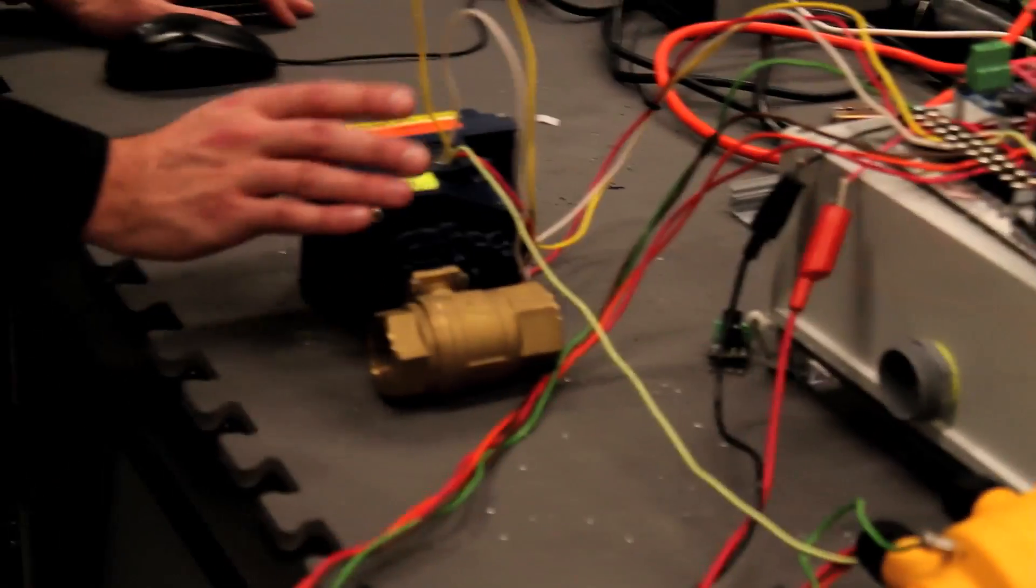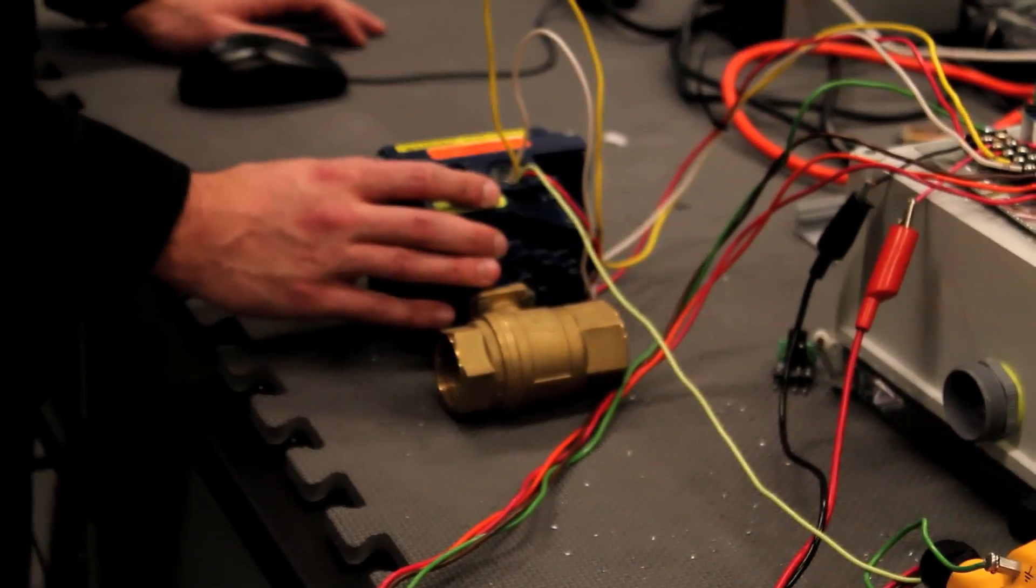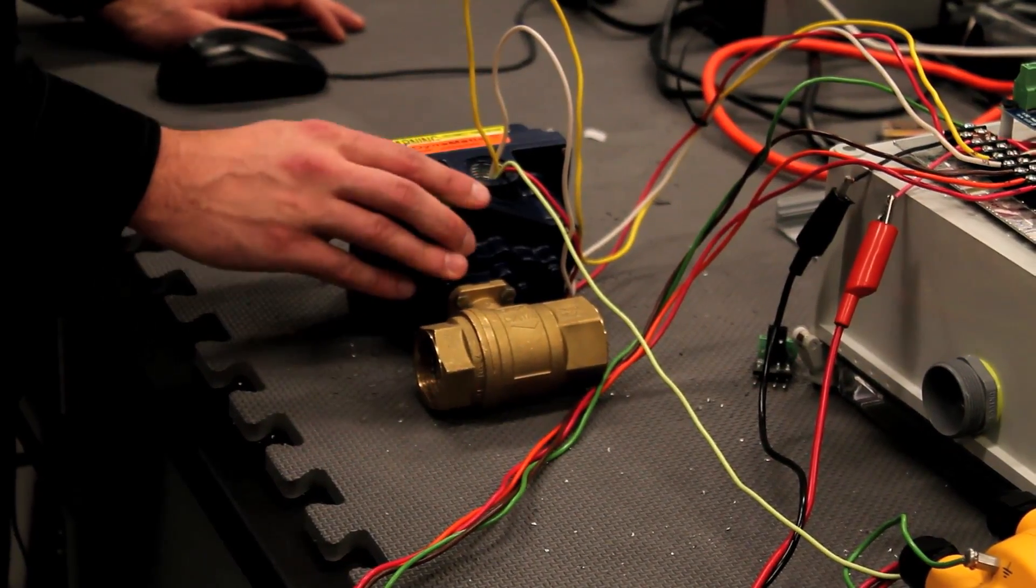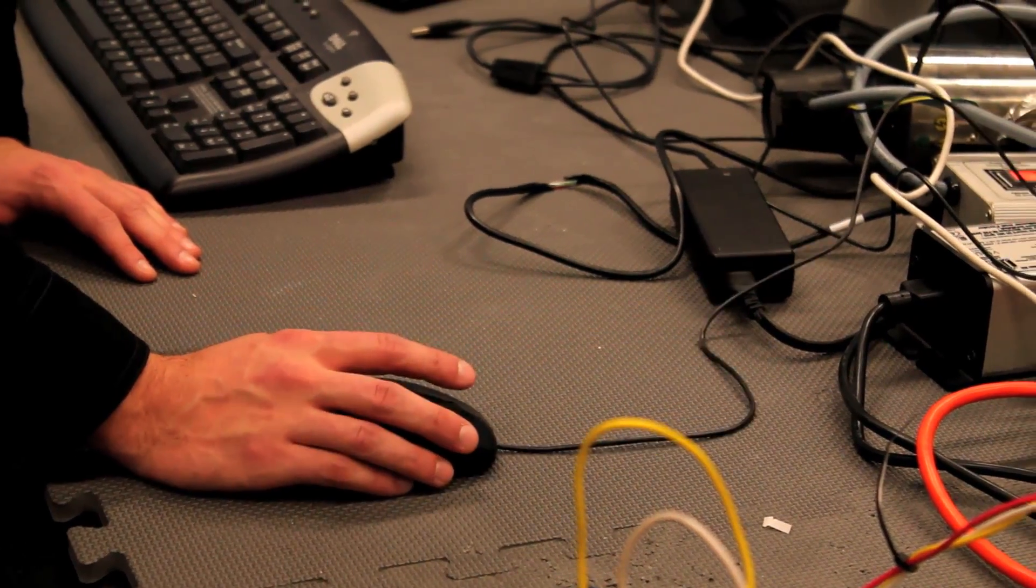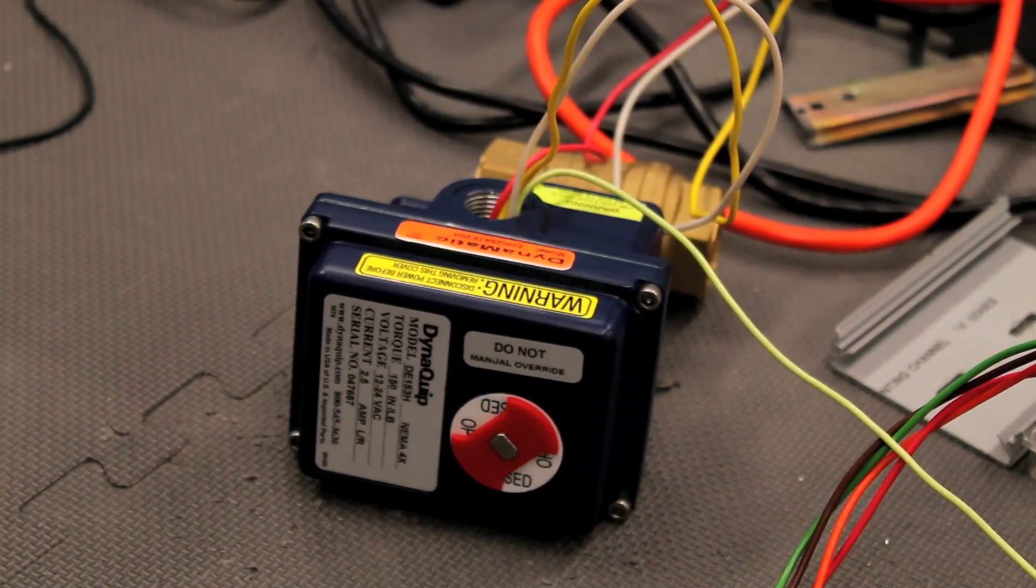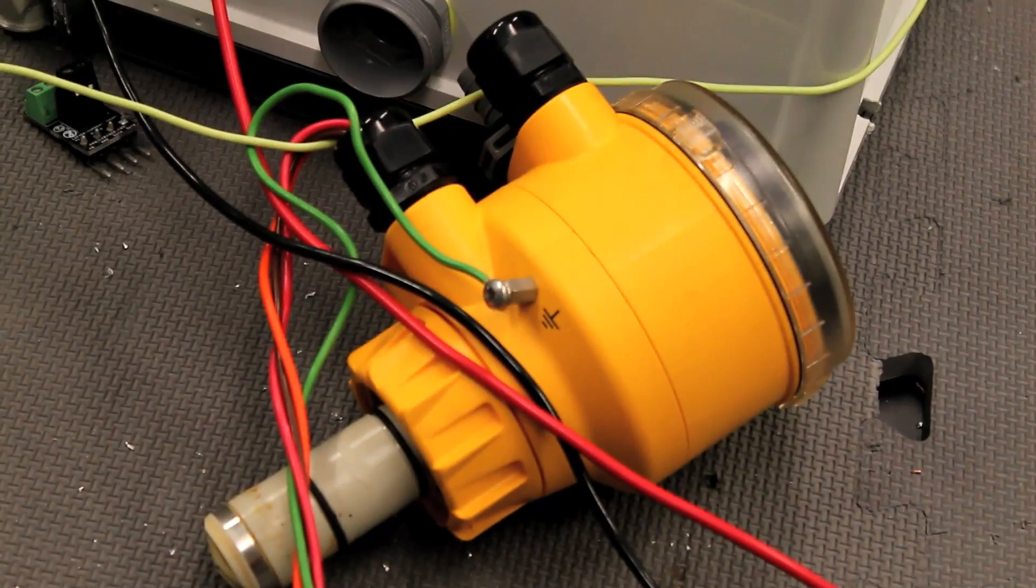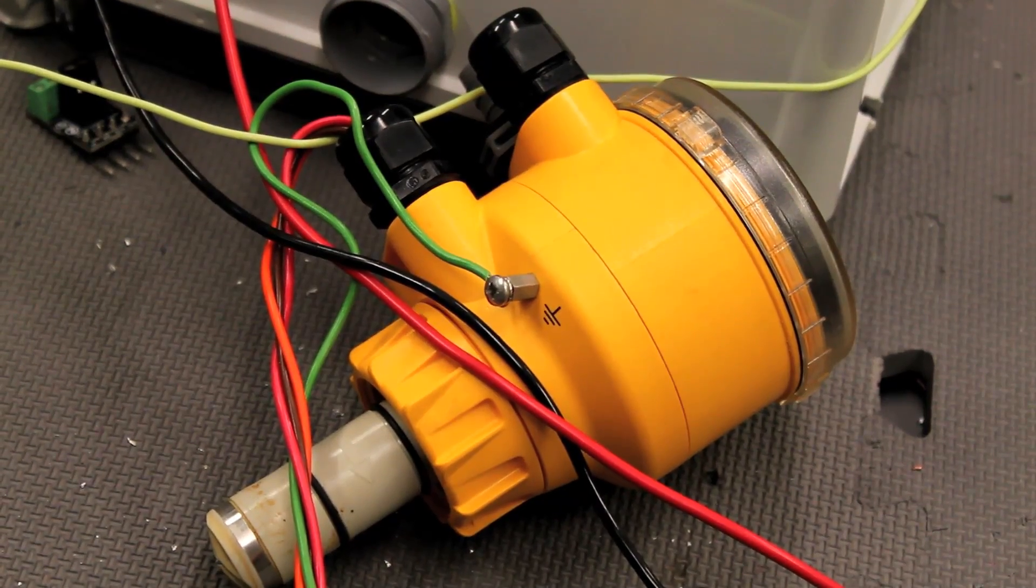This valve basically opens and closes based on flow rate if the flow rate gets too high, or we have to stop the flow for some reason, this valve will turn and stop the flow. This is the flow meter that sends a signal telling us how much water is going through the system at any given time.